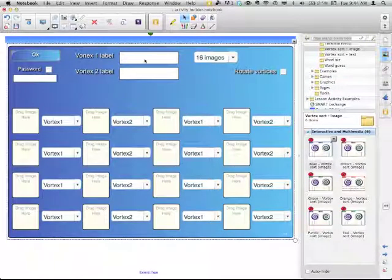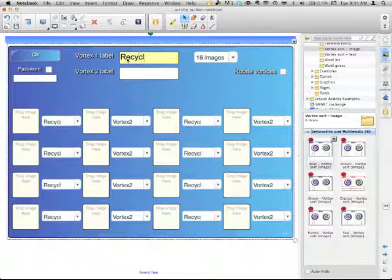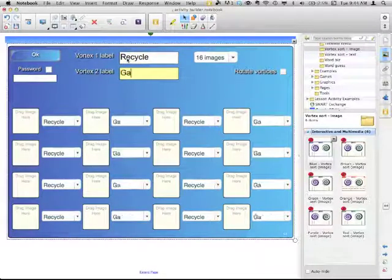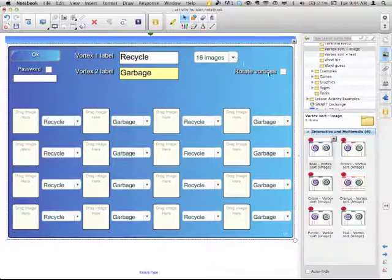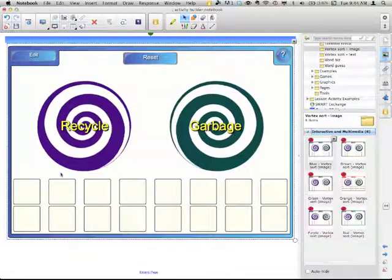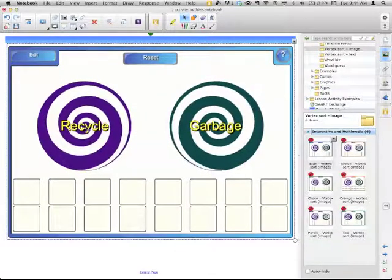You label your two vortices. So, Recycle, Garbage, etc. How many images you want. A lot of people like the rotate the vortices. So they're rotating and then you have your pictures and you drag them.